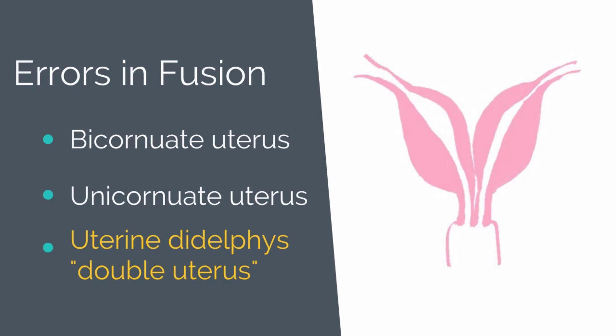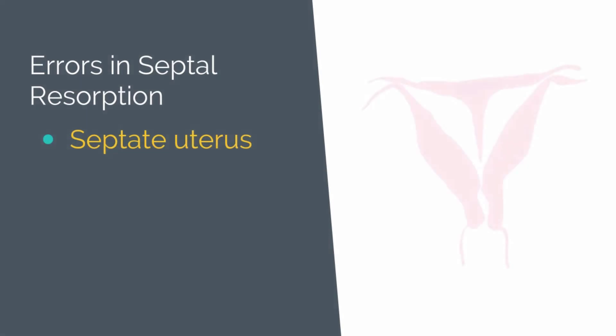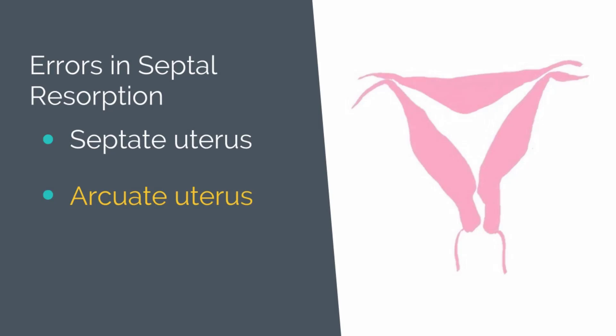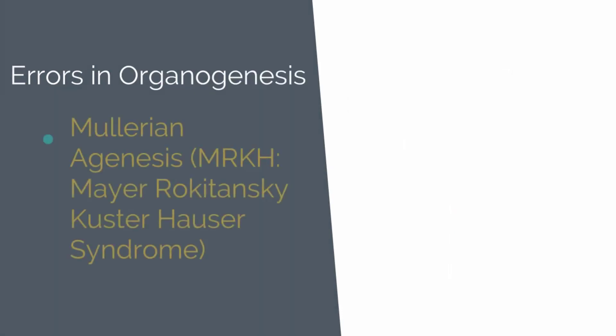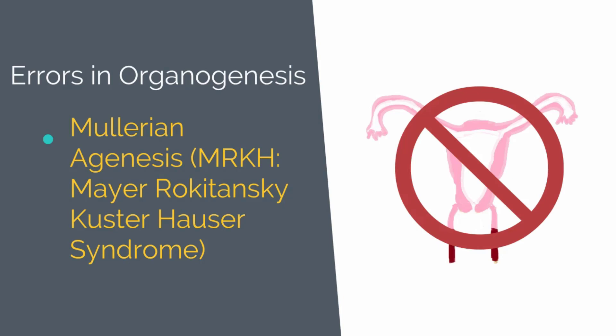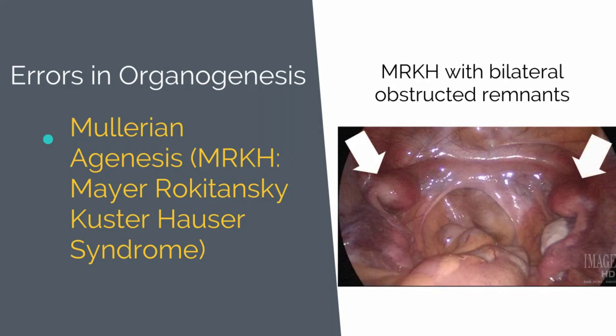There can also be errors in septal resorption. With the septate uterus, there is a normal external surface of the fundus with incomplete resorption of the midline septum between the two Müllerian ducts. Another septal resorption defect is an arcuate uterus, which has a slight midline septum with minimal and often broad fundal cavity indentation. The last type of error is an error in organogenesis. Müllerian agenesis, also known as MRKH or Mayer-Rokitansky-Küster-Hauser syndrome, is when all or part of the Müllerian tract fails to form or is underdeveloped, typically meaning an absent vagina with variable uterine development. In this laparoscopy image, the white arrows are pointing at bilateral uterine remnants.